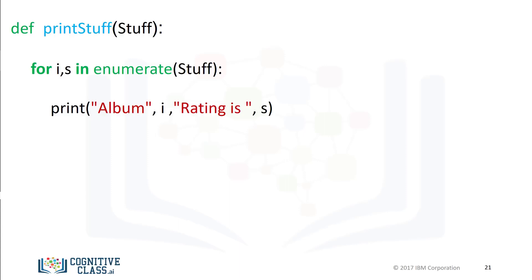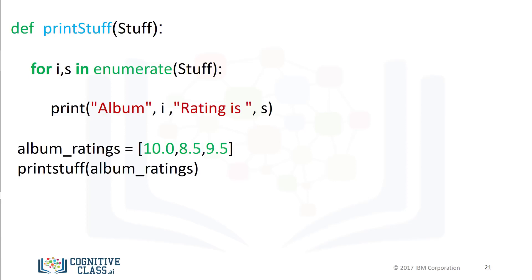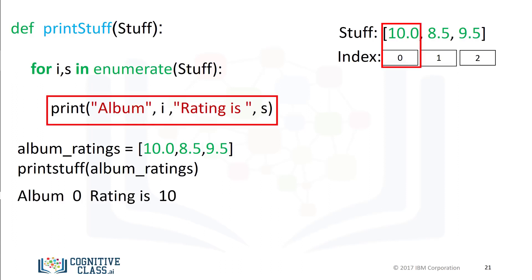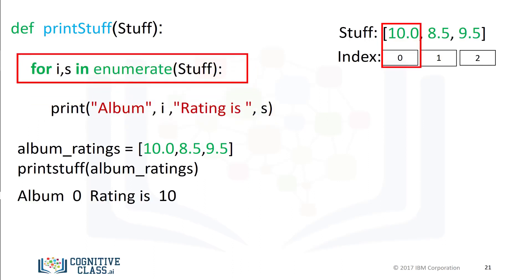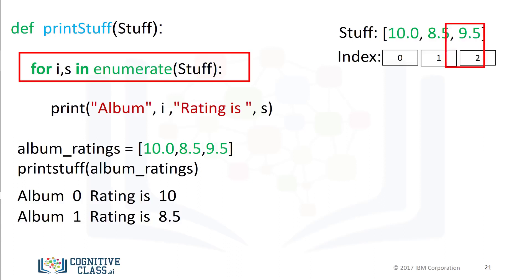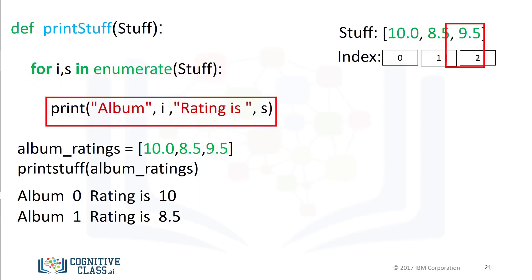This function prints out the values and indexes of a list or tuple. We call the function with the list album_ratings as an input. Let's display the list on the right with its corresponding index. The list is used as an input to the function enumerate. This operation will pass the index to i and the value in the list to s. The function begins to iterate through the loop, printing the first index and the first value in the list. We continue iterating — the values of i and s are updated and the print statement is reached. This continues until the final values in the list are printed out.